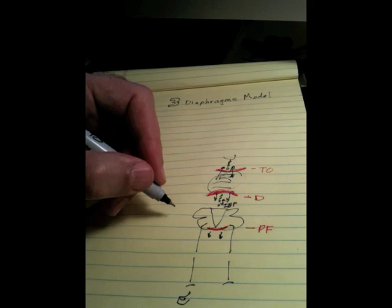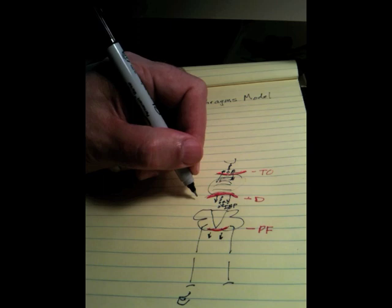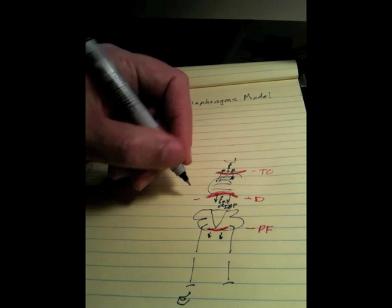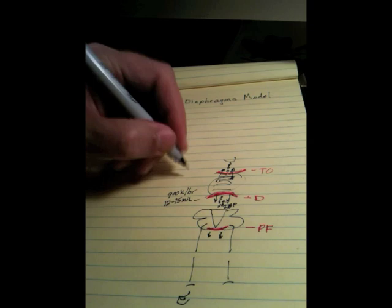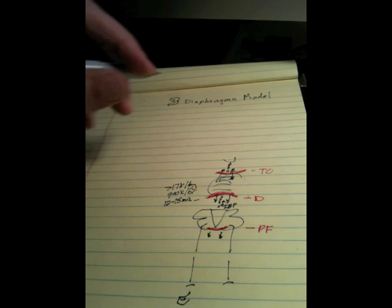Now, this relationship is so critical because of the high number of times we utilize this movement. Only the heart beats more and the eyes blink more often, but otherwise, patients need to understand that 12 to 15 times a minute they're breathing, which is up to 900 times an hour, which is over 17,000 times a day. So there's a big workload here. Now, how does this all fit together?